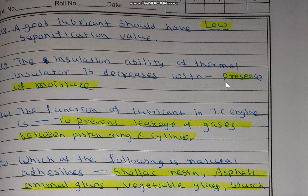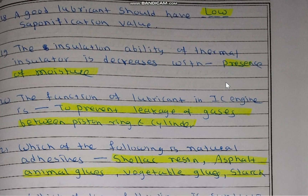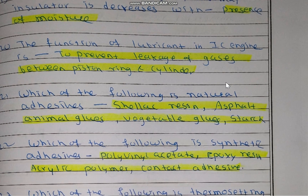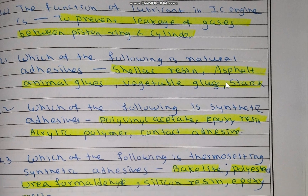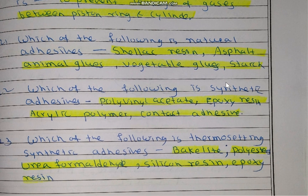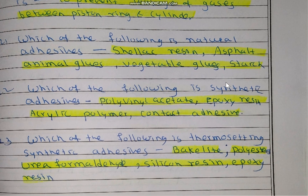The insulation ability of a thermal insulator decreases with the presence of moisture. The function of lubricant in an IC engine is to prevent the leakage of gases between the piston ring and cylinder.